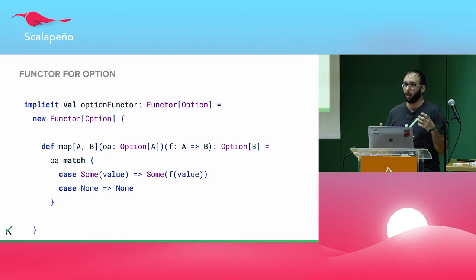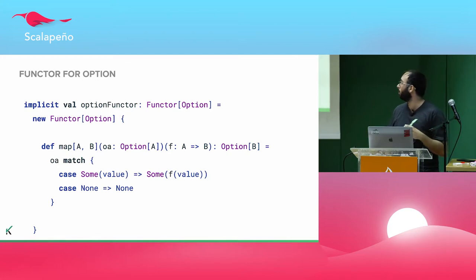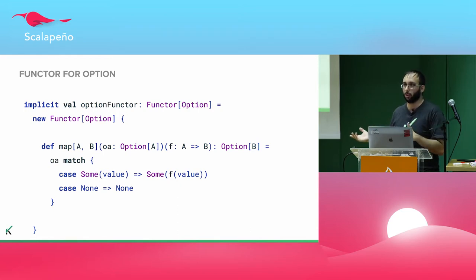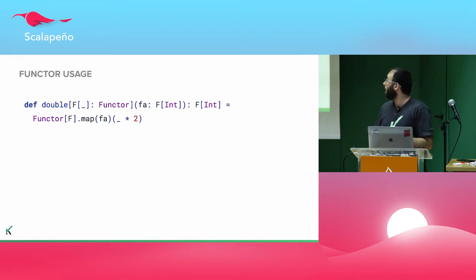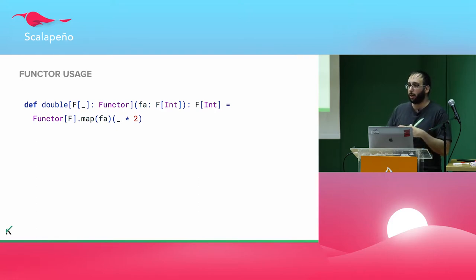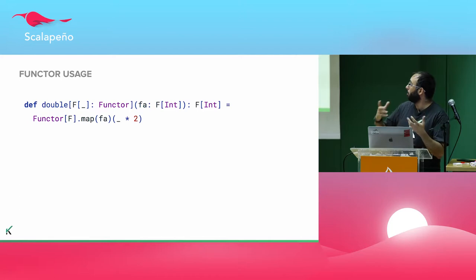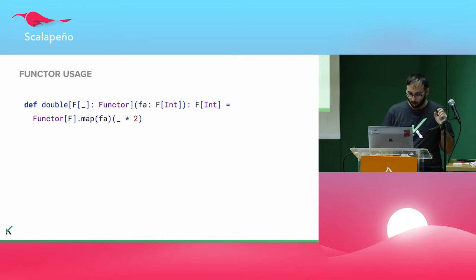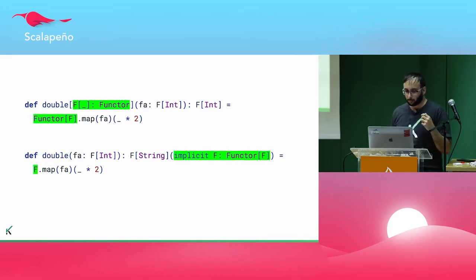Let's look at a functor for options. How do you map over options? We need to implement the functor interface and implement the map function. We get a function and pattern match over the option: if it has a value inside we apply the function and return a Some, and if it doesn't we return a None — we can't apply the function. We can then define a function that requires F, a higher-kinded type, to be a functor, and use its map function. This can work with anything that has a functor, using implicit syntax.